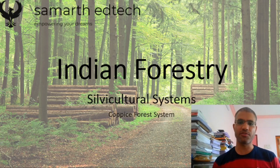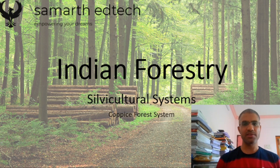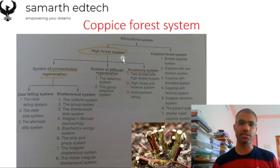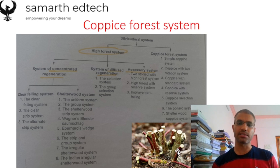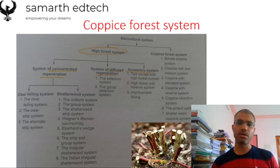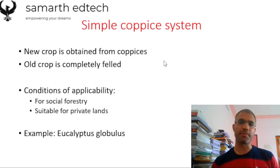Hello aspirants, in this lecture of Indian Forestry we are going to see the Coppice forest system. It is a part of our silvicultural systems. In previous lectures we saw the high forest system, system of concentrated regeneration, system of diffused regeneration, and accessory system. In this lecture we will see the various subtypes of your Coppice forest system. A coppice is a kind of stump — when a given tree is cut down, the stump that remains is called a coppice.